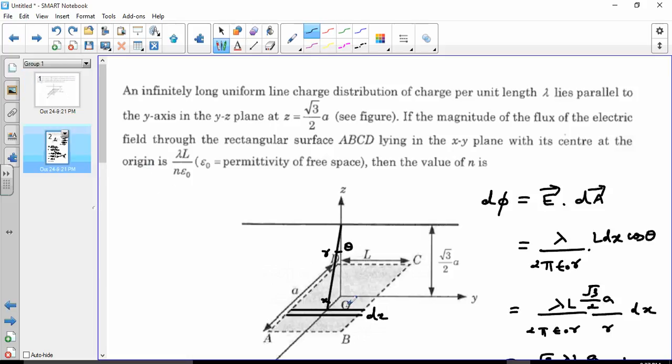So we take a strip of thickness dx at distance x. The flux through it will be E dot dA. E is lambda by 2 pi epsilon r. This is r. dA for this strip is L dx.